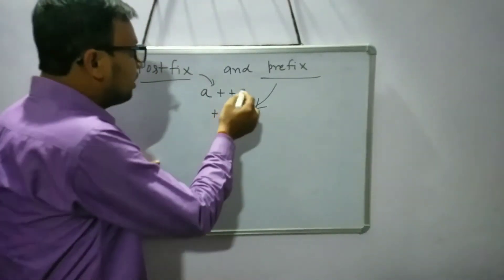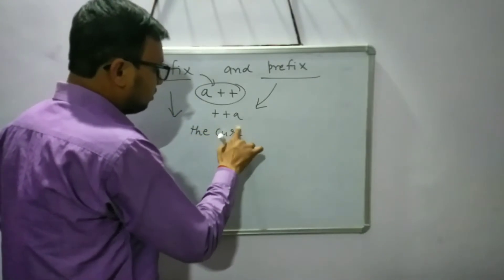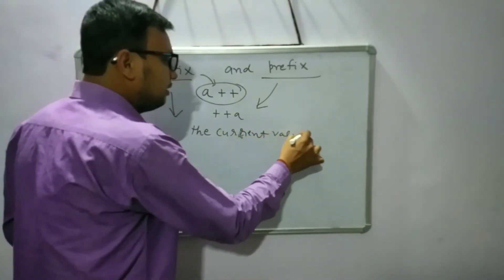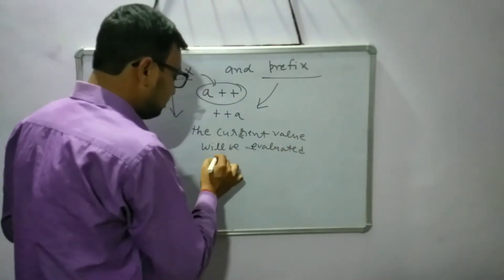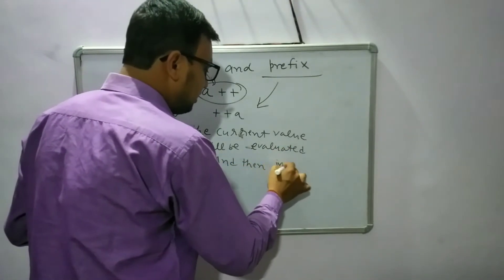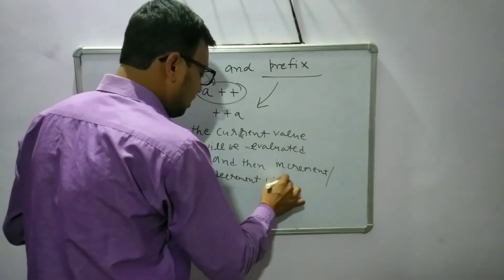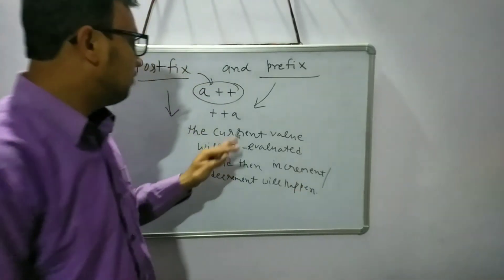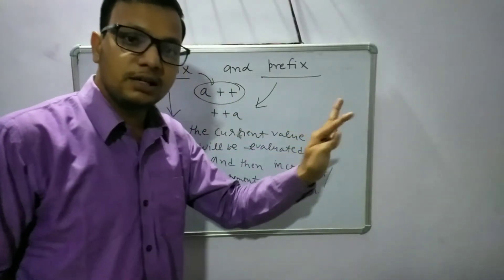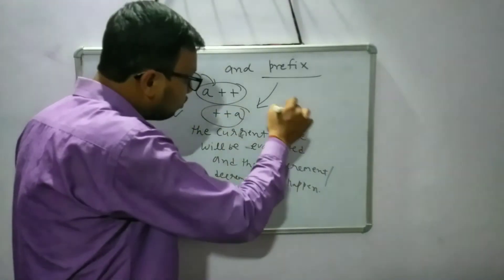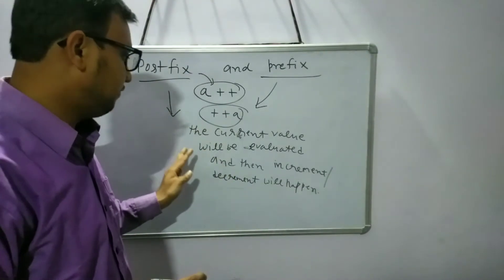We will see what is the use of postfix and prefix operators along with increment and decrement. Postfix means first the current value will be evaluated, and after evaluation then increment or decrement will happen. In postfix, the old value is used first and later the value gets increased or decreased. In prefix, the case is totally opposite — first the value has to be increased or decreased, and then the value will be evaluated.